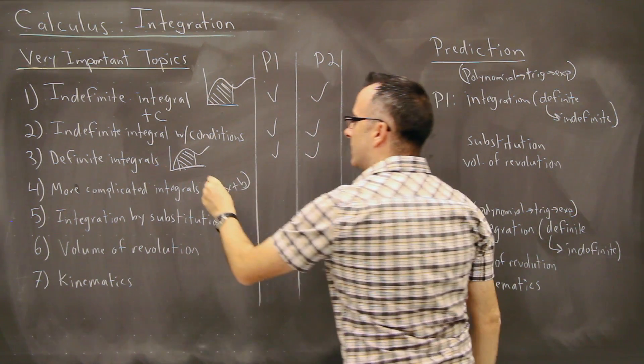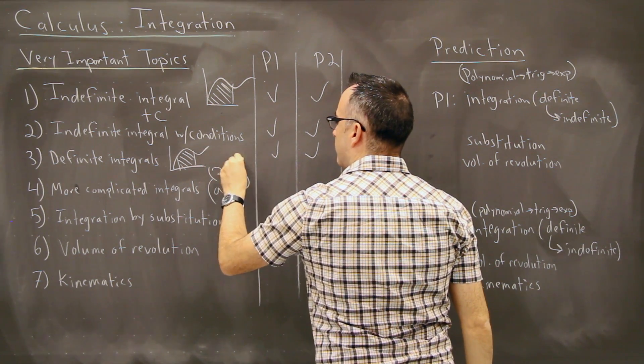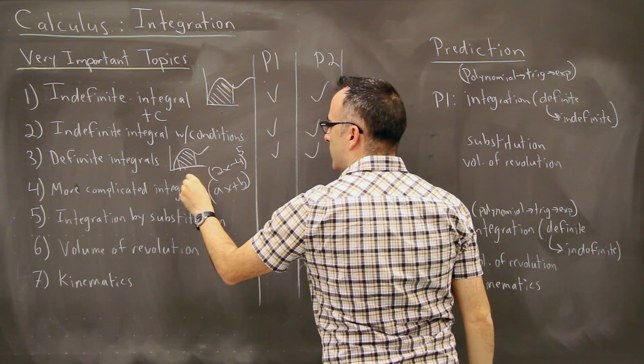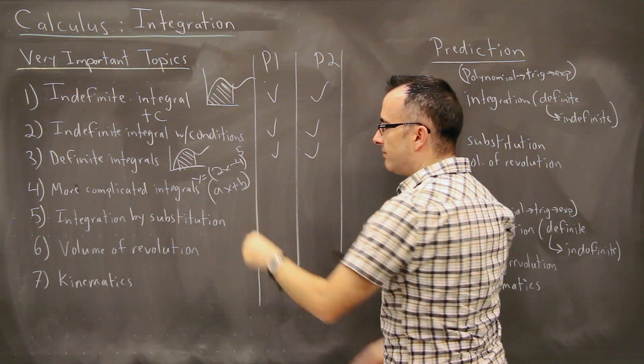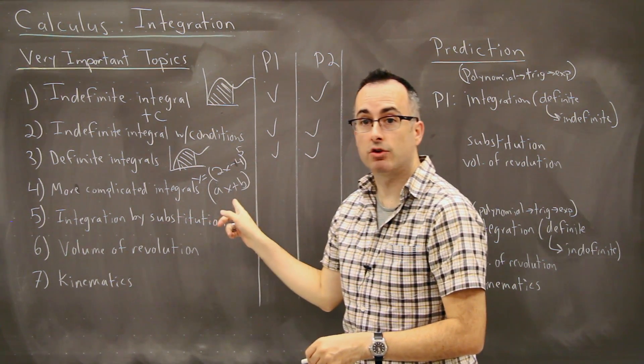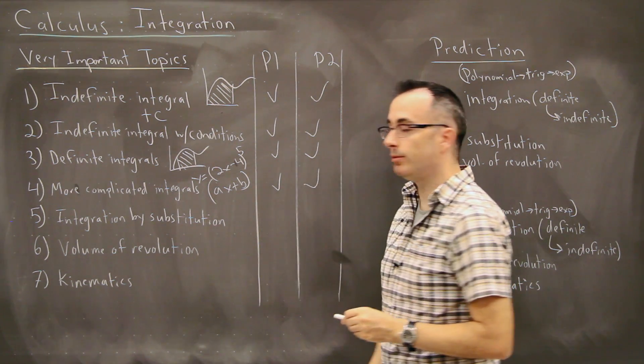So in other words, let's say it's like, I don't know, 2x minus 4, something like that. Let's say to the power of 5. Let's say this is my equation here. I try to find the integral of this. So this is how we would actually do it. We use this more complicated integrals trick. And that one is also on paper one and two.